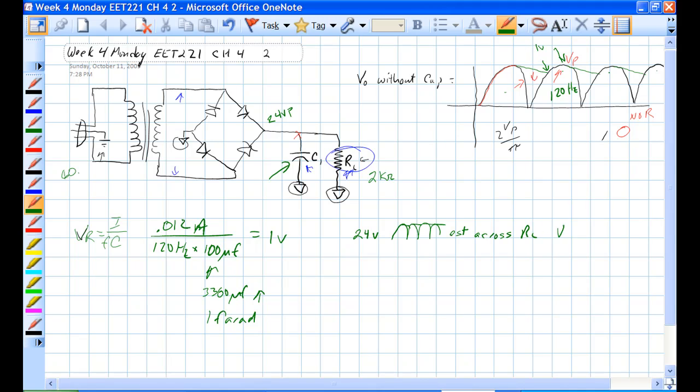Okay, so VRL is equal to 24 volts, and if RL is equal to 2k ohm, then 24 volts divided by 2k ohm is equal to—what is it? So we've got about 12.0 milliamps.